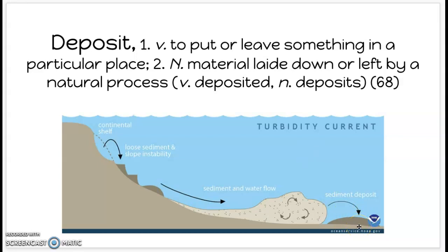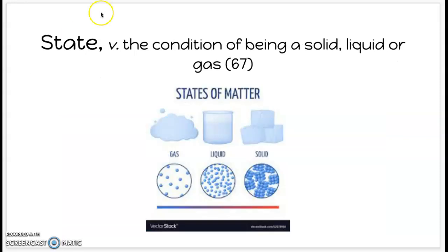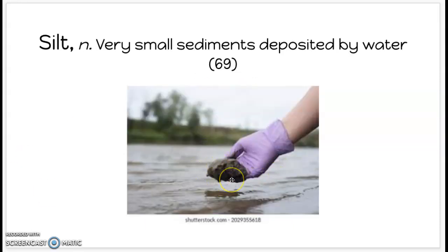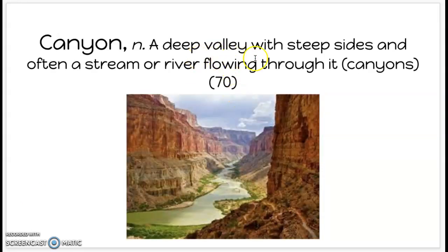The word state refers to the condition of being a solid, liquid, or gas — the states of matter. Silt refers to very small sediments deposited by water. And canyon is a deep valley with steep sides and often a stream or river flowing through it.